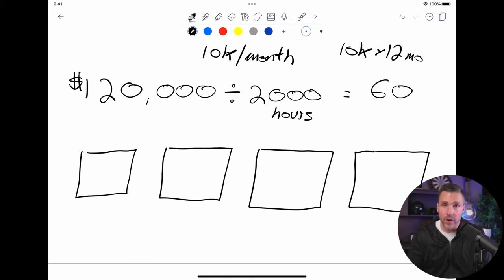So regardless, we take that 120 grand divided by 2000 hours. That gives us a value per hour of 60 bucks.